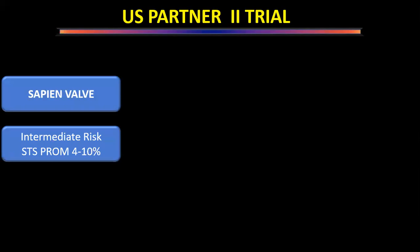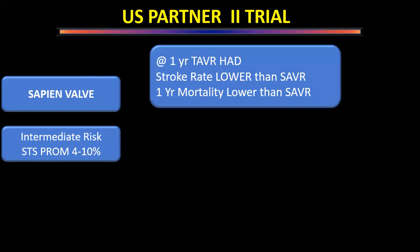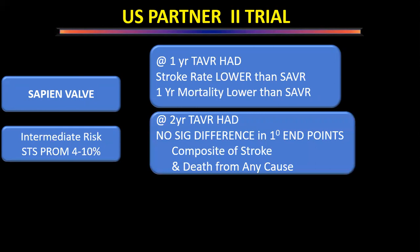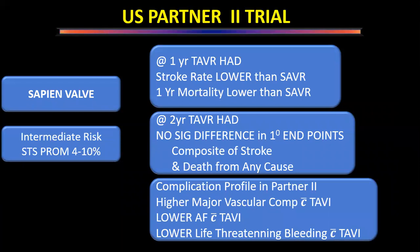Partner 2 trial also used the Sapien valve and studied intermediate-risk patients (STS PROM 4–10%). At one year, stroke rate and mortality were lower than surgical AVR. At two years, no significant difference in the primary endpoint of composite of stroke and death from any cause. Complication profile similar to Partner 1: higher major vascular complications, but lower risk of atrial fibrillation and lower risk of life-threatening bleeding with TAVI.